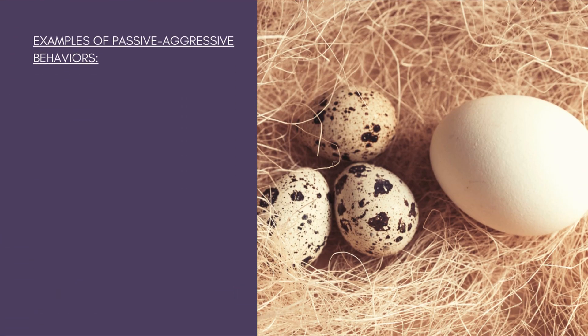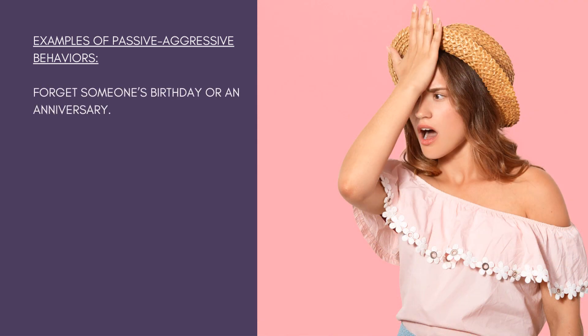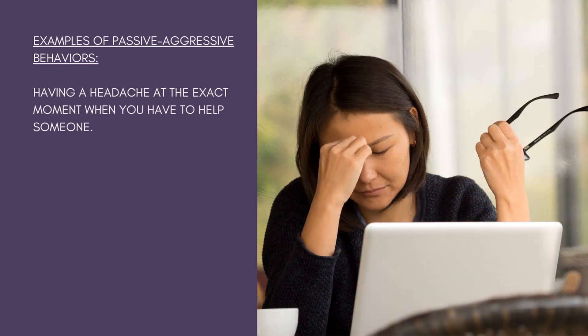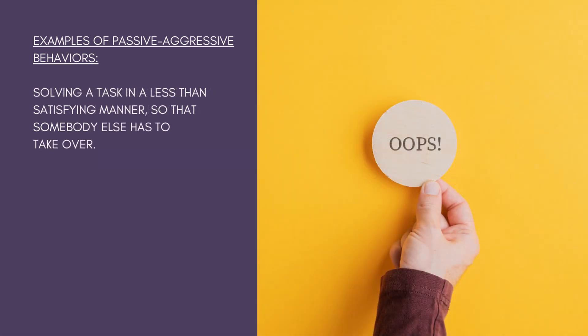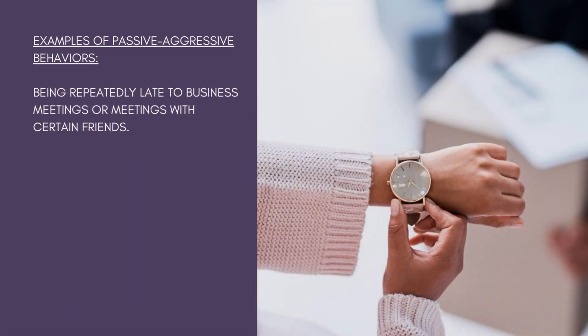Here are some examples of passive-aggressive behavior. Forgetting someone's birthday or an anniversary. Having a headache at the exact moment when you have to help someone in a way that is meaningful to them, like babysitting their child so they can go to the restaurant or the movies. Solving a task in a less-than-satisfying manner so that somebody else has to take over. Being repeatedly late to business meetings or meetings with certain friends.